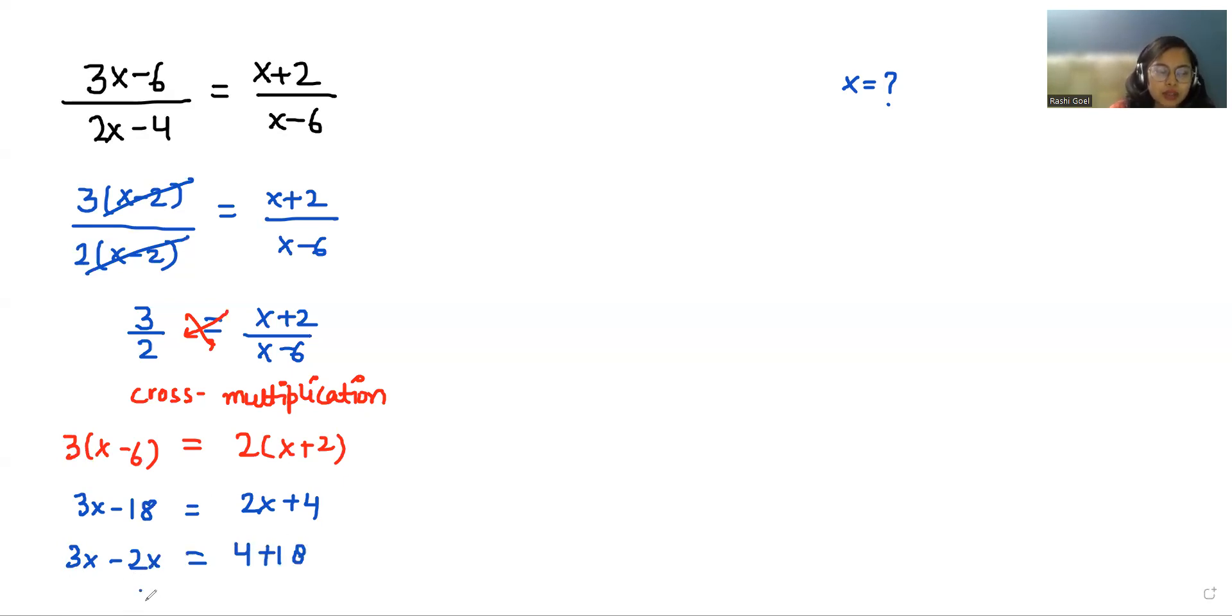So 3x minus 2x is x and 4 plus 18 is 22. So the value of x is 22.